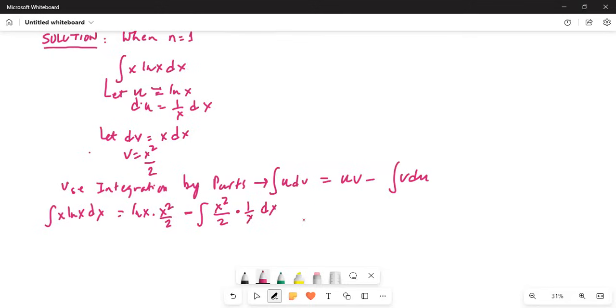This will be x squared by 2 times ln x for the first term which does not change, minus integration equals x squared by 2 minus x squared by 4 times ln x equals x squared by 4 plus c. That's your final answer when n is equal to 1.